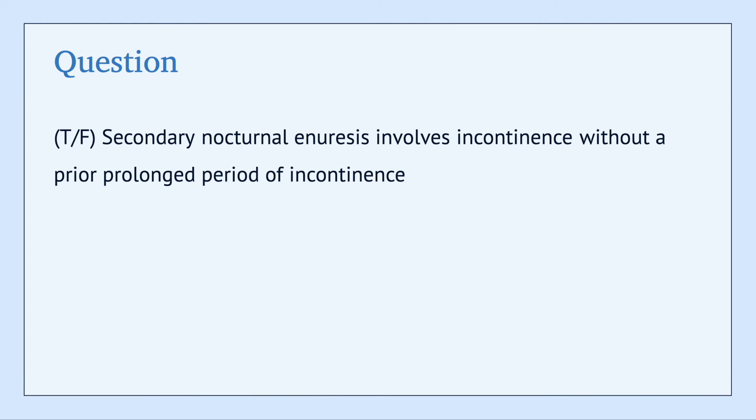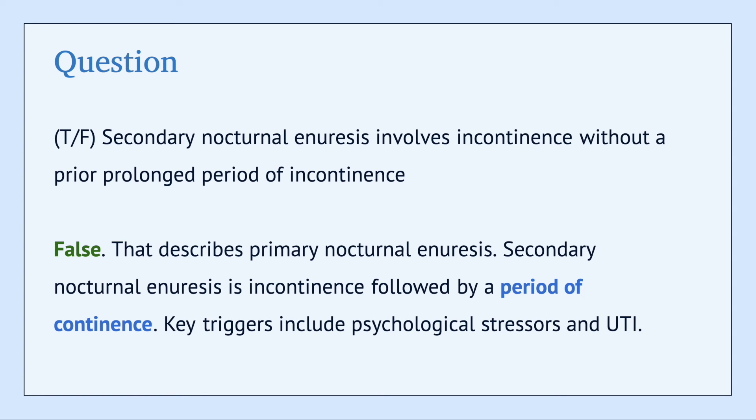Let's do a couple of quick true-false questions. This one says: secondary nocturnal enuresis involves incontinence without a prior prolonged period of continence — true or false? This is false. The question is actually describing primary nocturnal enuresis. Remember that secondary nocturnal enuresis is a period of incontinence that occurs after a period of continence.